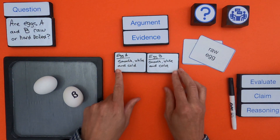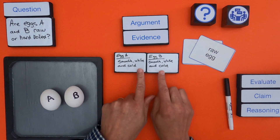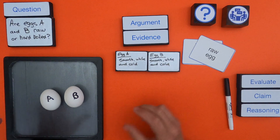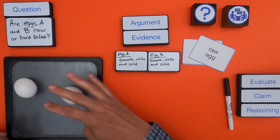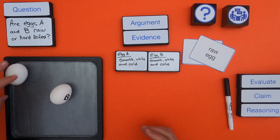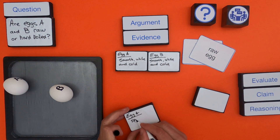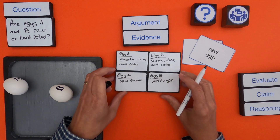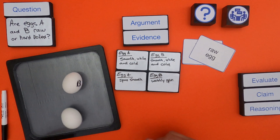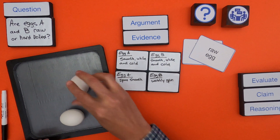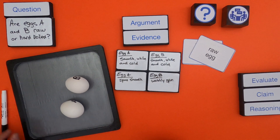As I look at the first evidence, egg A is smooth, it's white, and it's cold — both eggs are the same so far. That might be good evidence of where the eggs were, like whether they were in the refrigerator, but I don't see any difference between the two yet. Now I'm starting to notice that the way they spin is different: A just keeps spinning smoothly, but B has a wobbly spin. If I stop A, it just stops. But if I stop B, it keeps going. So that's additional evidence of a difference between the two.